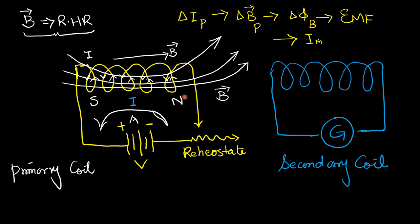If the current is clockwise, then the north pole on the right side changes to a south pole and the south pole on the left side is converted to a north pole — the direction of the magnetic field lines will be reversed. Again, if there is a change in current caused by the rheostat, there will also be production of induced electromotive force in the secondary coil. So for both directions of current — clockwise or anti-clockwise — there will be production of induced EMF, as long as the current is continuously changing.